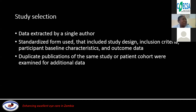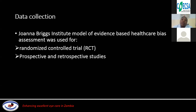In terms of study selection, data was extracted by a single author using a standardized form that included study design, inclusion and exclusion criteria, baseline characteristics, and outcome data. They also took note of studies with duplicates and patient cohorts to examine for additional data. For data collection, they took into consideration aspects of bias. The Joanna Briggs Institute model of evidence-based healthcare bias assessment was used — specifically to assess the randomized control trials as well as the prospective and retrospective studies.